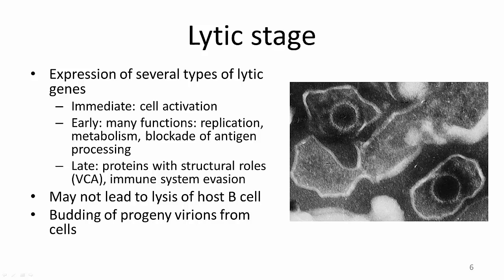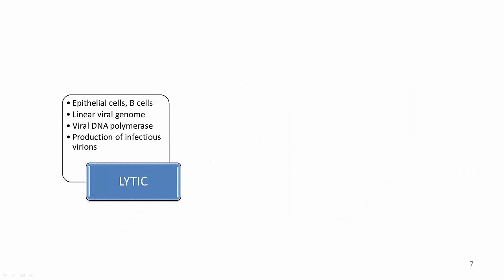Unlike many other viruses, EBV lytic replication does not inevitably lead to lysis of the host cell because EBV virions are produced by budding from the infected cell. Acute EBV infection of epithelial cells typically results in lytic infection and destruction of the cell. When B cells are infected with EBV, a small subset enters a lytic phase with rapid virus replication resulting in cell lysis. The majority, however, establish a latent infection without active replication or release of virus.